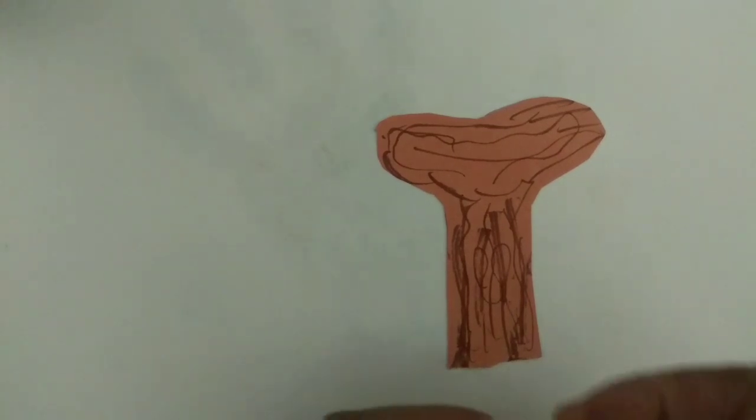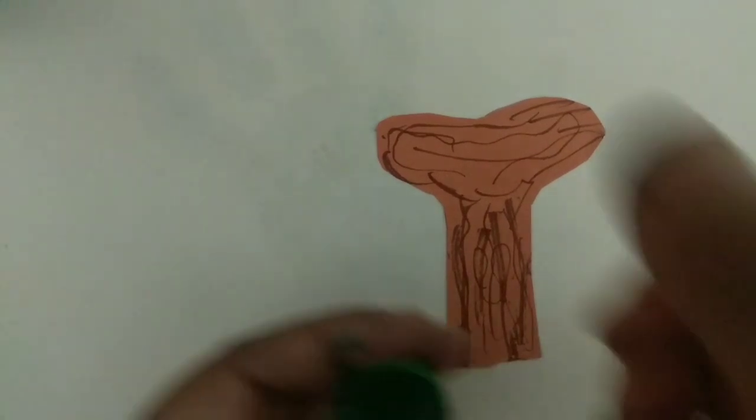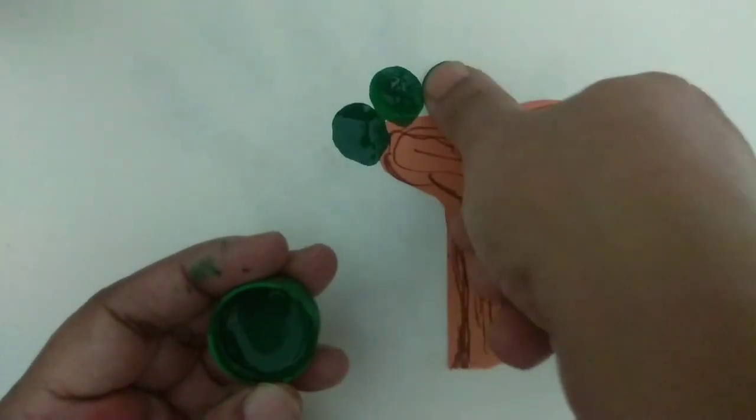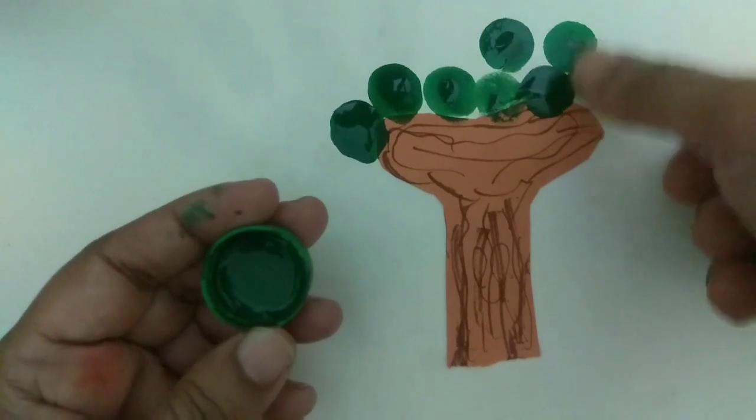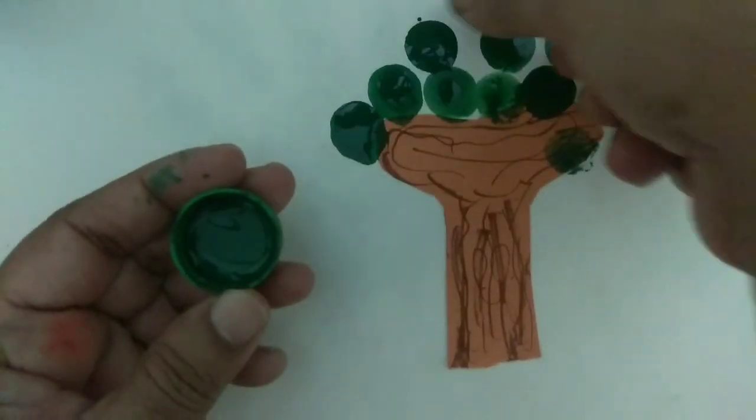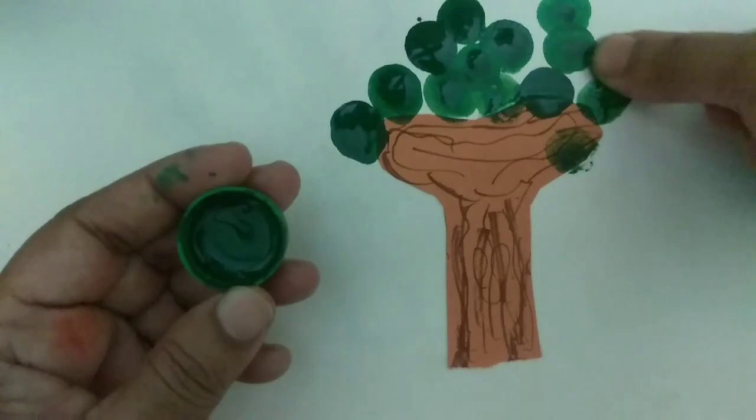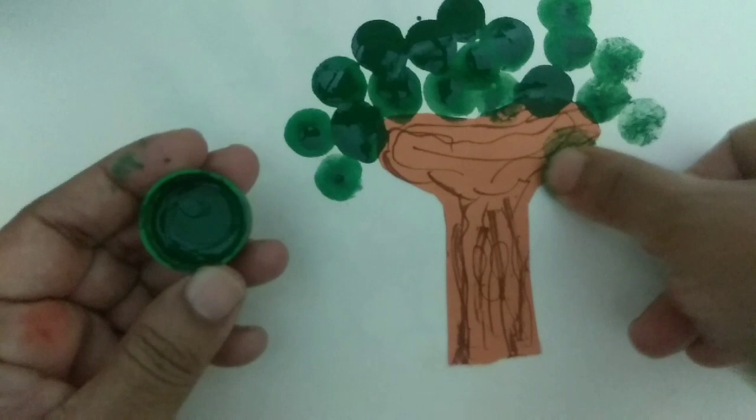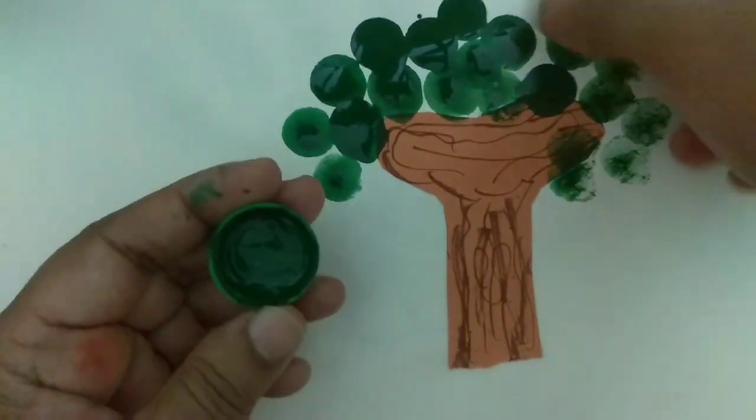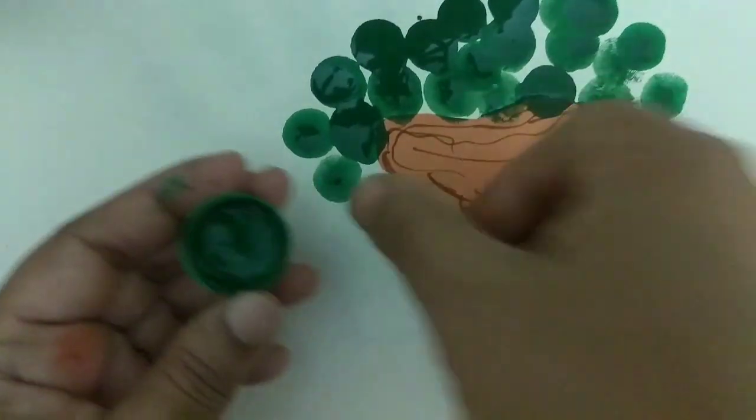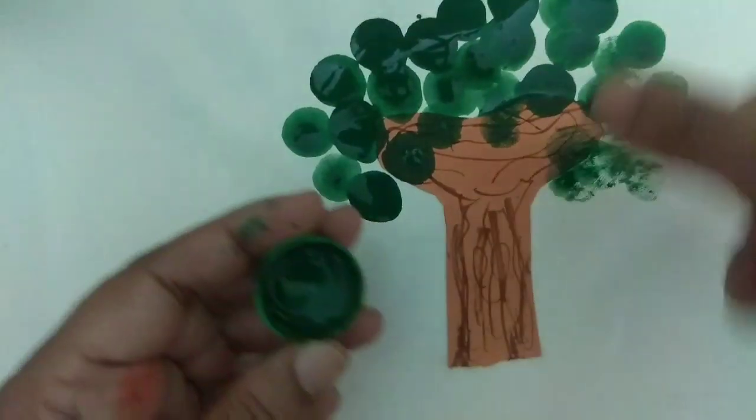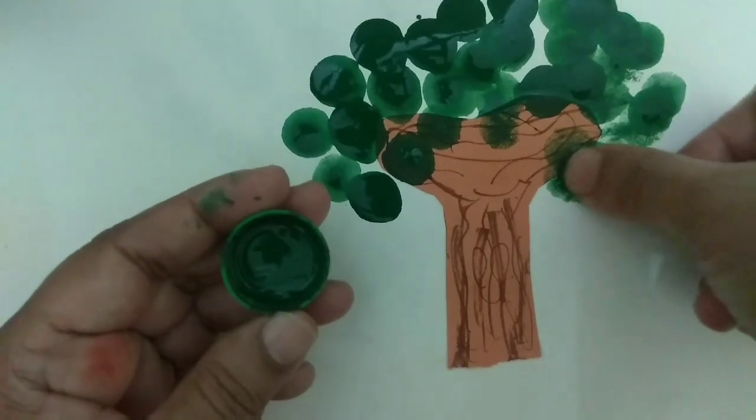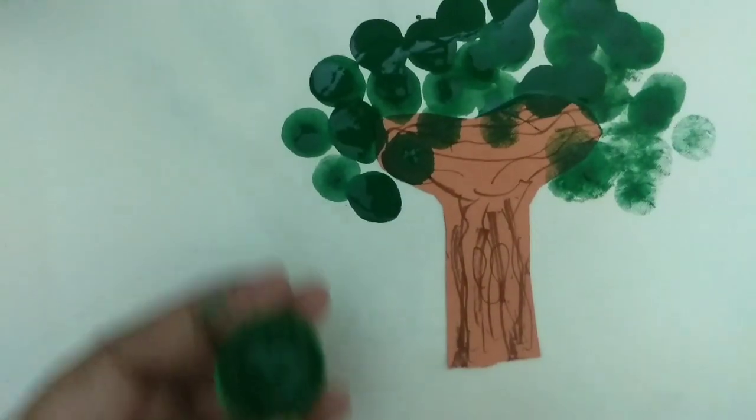Now I will do thumb painting for leaves. T for thumb painting. T for thumb. Trees give us shade, give us fruits, and are our best friends. We should save them and plant trees as much as we can.